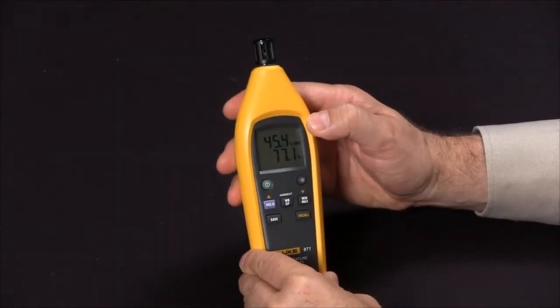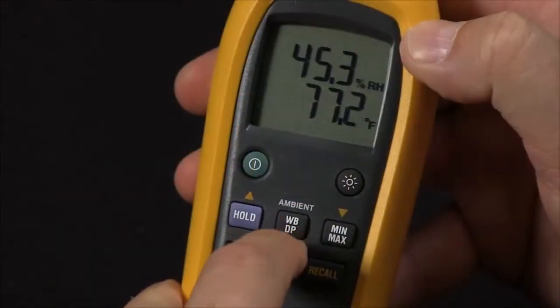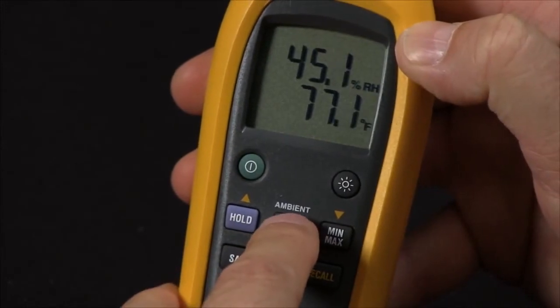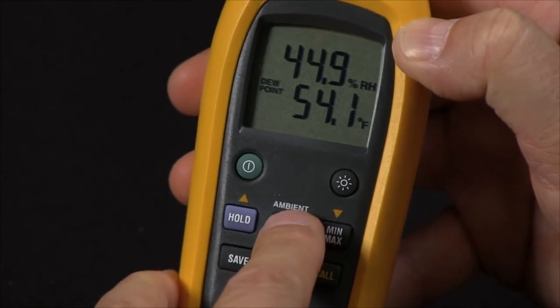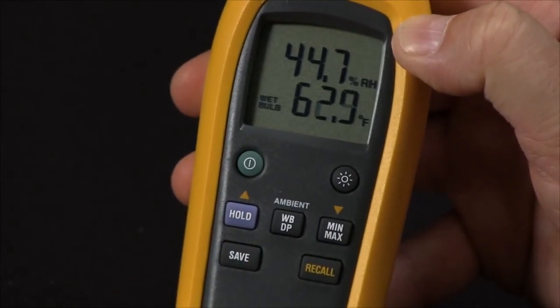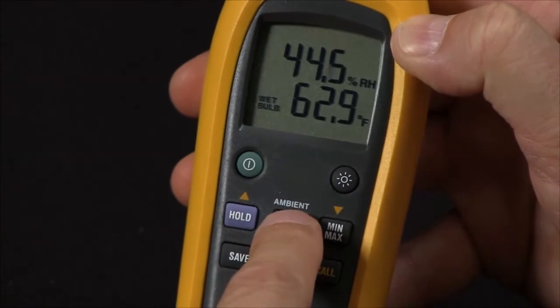Now, your meter will measure in ambient mode. To access your dew point measurement, press the ambient button one time. To get to your wet bulb temperature, press it once more. To return back to ambient temperature, just press the button one more time.